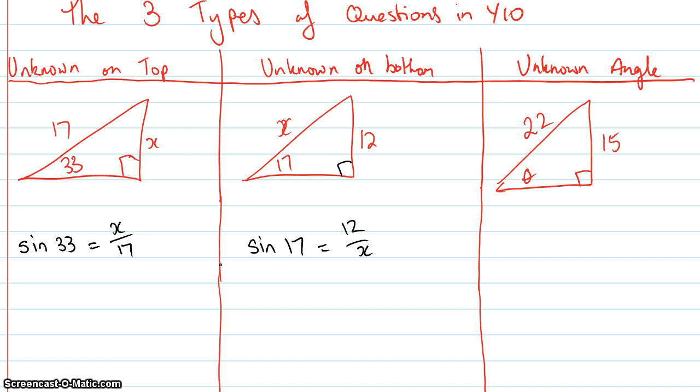So for this one here, I simply multiply both sides by 17, so x equals 17 times sine 33—and I'll put a bracket around the 33 just to be safe. Now I could go to my calculator and punch that in and I would get the right answer.